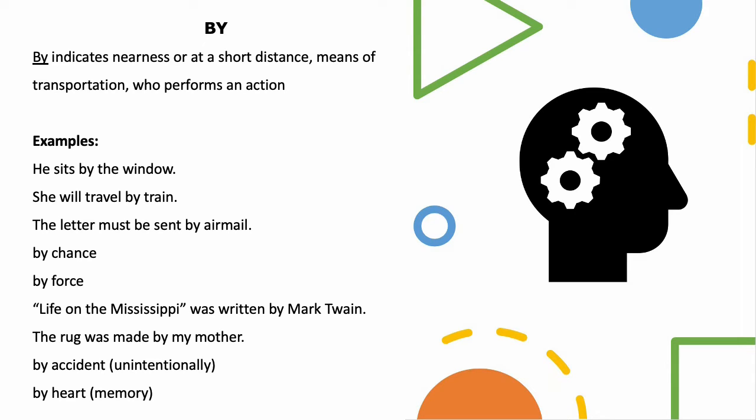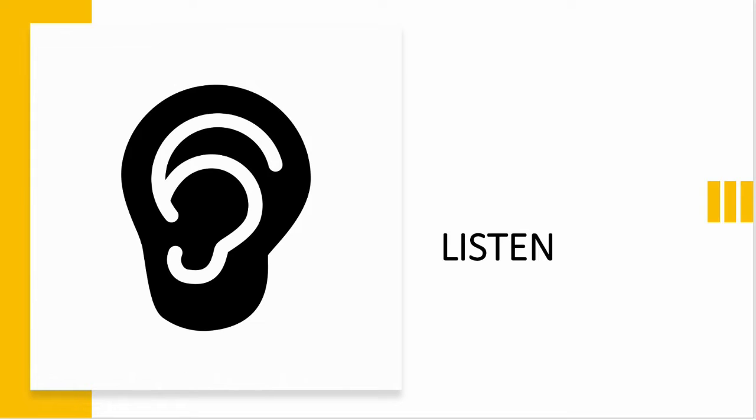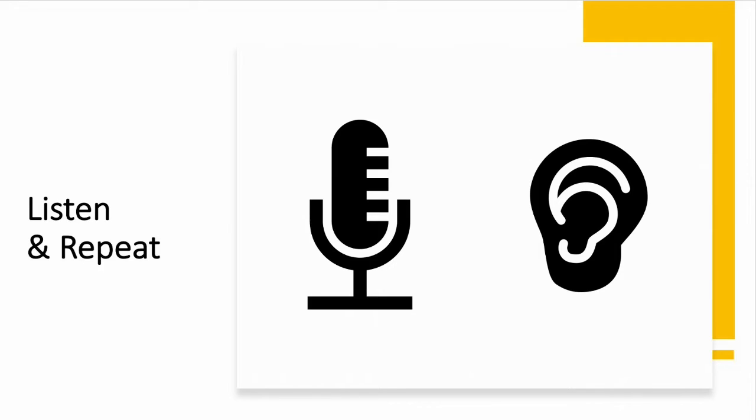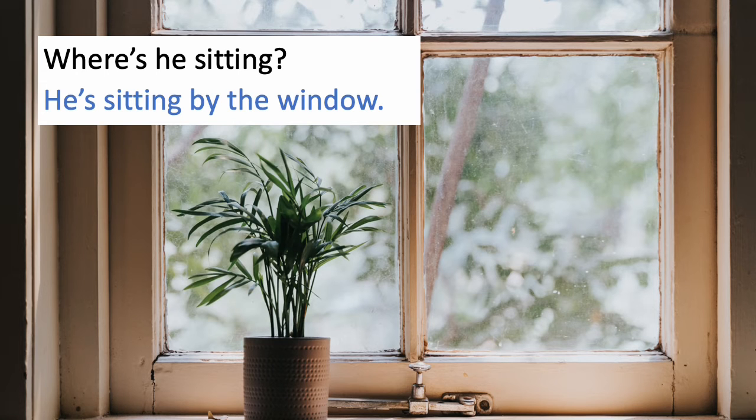Now let's start practicing. First, listen. Where is he sitting? He is sitting by the window. Now listen and repeat. Where is he sitting? He is sitting by the window.